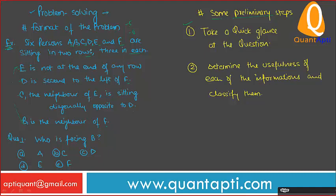A student explains their solution: E is not at the end of any row and there are three persons in each row, so E must be in the middle. D is second to the left of F, meaning F is at one extreme end and D is at the other end of the same row. Then B is sitting between D and F, and E is directly opposite to B.